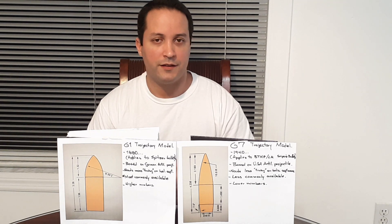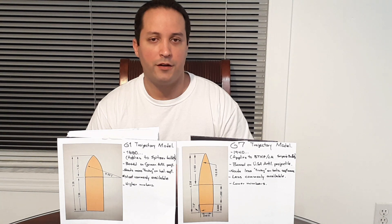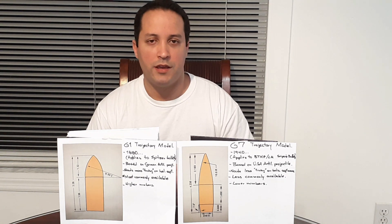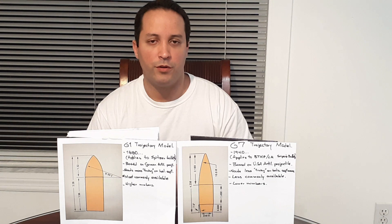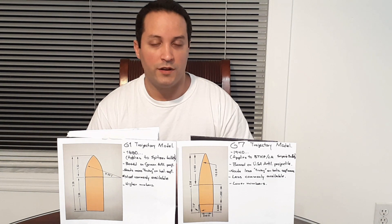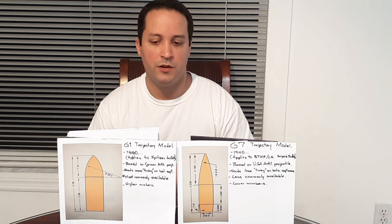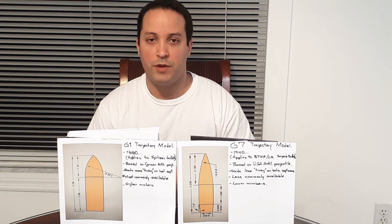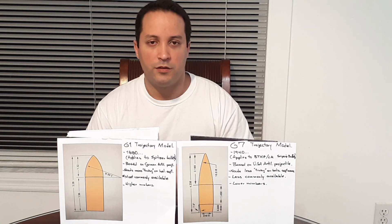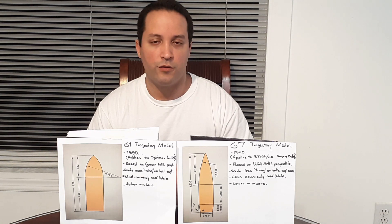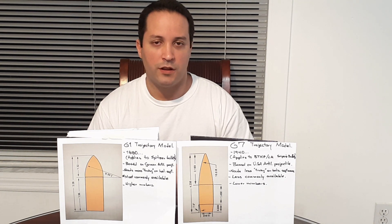Do not expect the same muzzle velocity from the provider if you're using different barrel lengths. As an example, a 308 with a 20 inch hunting barrel versus a 26 inch PRS or long range competition or sniper grade barrel. Or a 223 or 556 on a 16 inch versus a 20 inch long barrel.